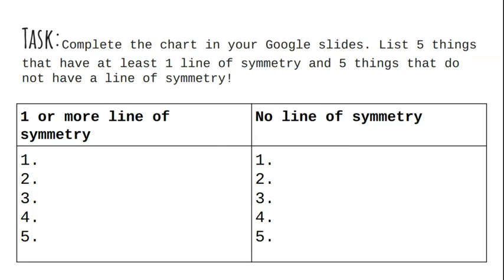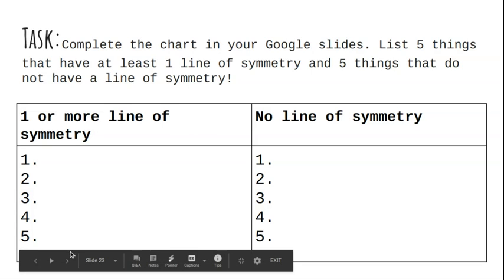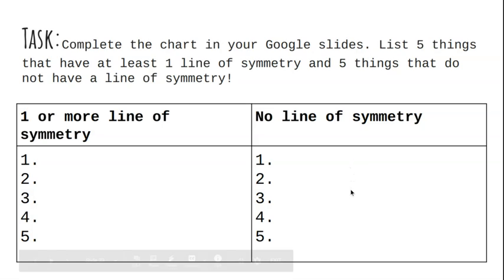So for today, what you're going to do — you can do this on paper or I will post a document that you can type into — you're going to write five different things in your life that have lines of symmetry that you see. And then you're going to write five more things that do not have a line of symmetry. Go outside, walk around your house. It doesn't have to be things with circles — it can be rectangles, triangles, squares. Remember, lines of symmetry.